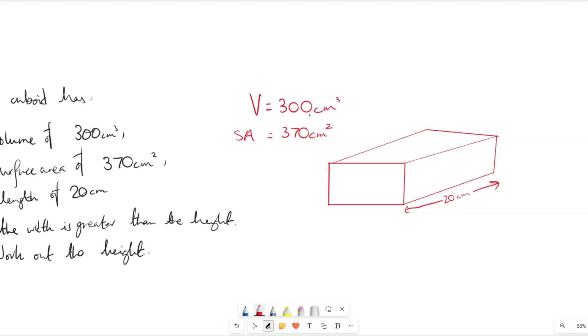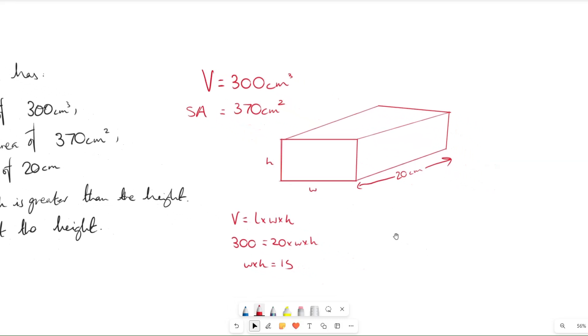I only realized this near the end of the exam, but since our volume is going to be length times width times height, and we have our volume is 300 equals 20 times width times height, then our width times height is going to equal 15. So that means they have to multiply together to 15. We know that the width is greater than the height. So let's look at the surface area.